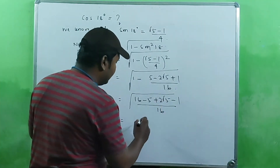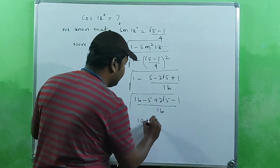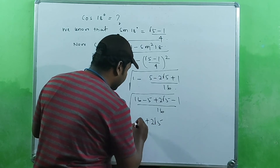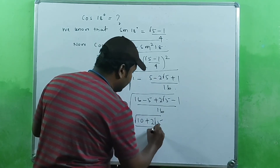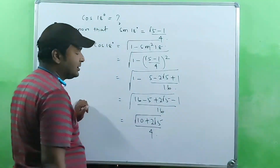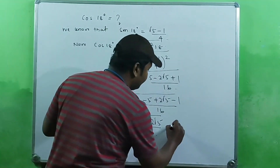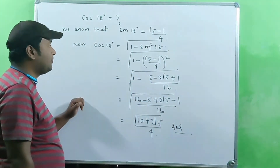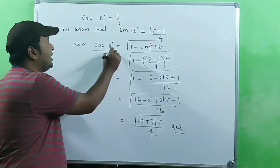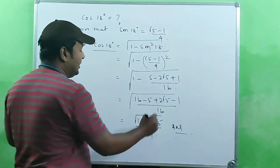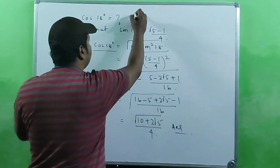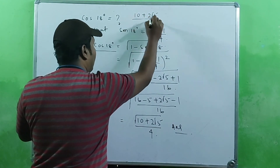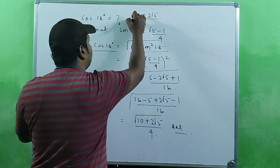Simplifying the numerator: 16 − 5 + 2√5 − 1 = 10 + 2√5. The denominator's square root gives 4. So our final answer is: cos 18° = √(10 + 2√5) / 4.